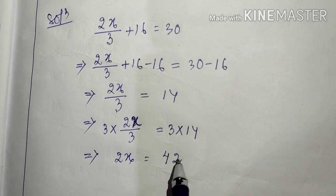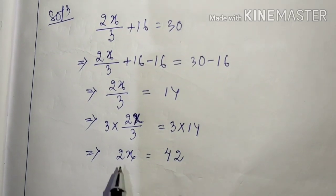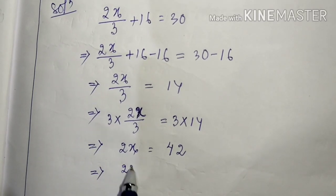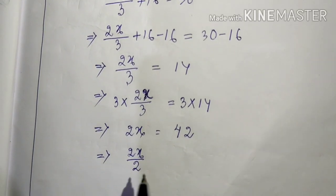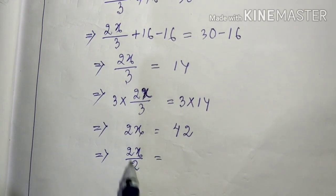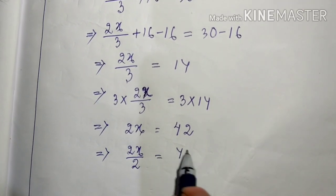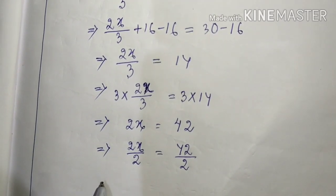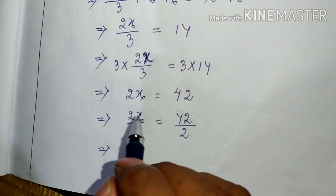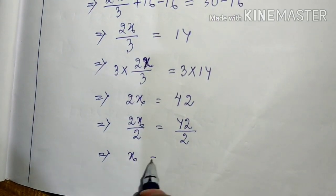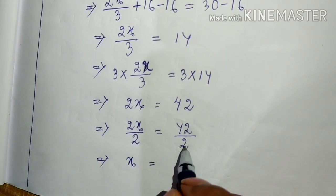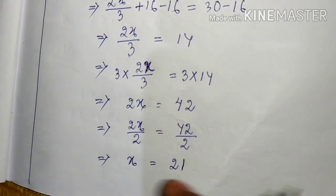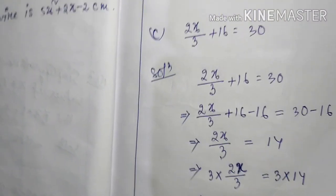Now we have 2x = 42. We need to remove the 2, so we divide both sides by 2. Two and two cancel, x is left. 42 divided by 2 is 21. So x = 21.